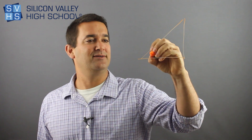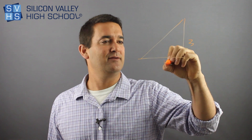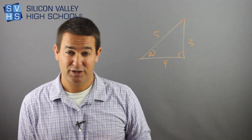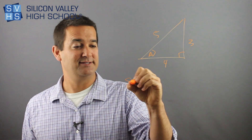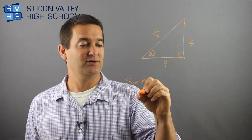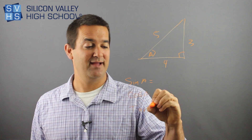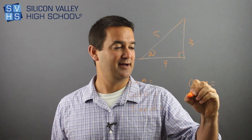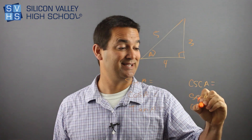Let's do this with actual numbers. Here's a right triangle with sides 3, 4, and 5, and we'll call this angle A. They want the six trigonometric function ratios of A. So we're going to find: sine of A, cosine of A, tangent of A — then the flips: cosecant of A, secant of A, and cotangent of A.